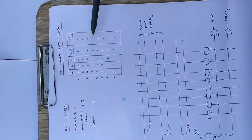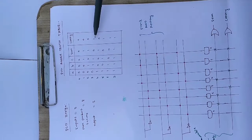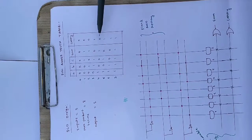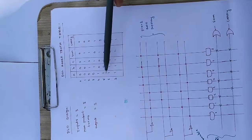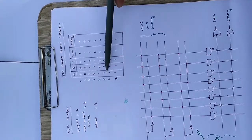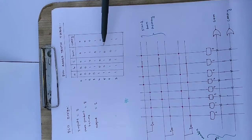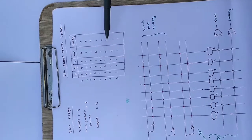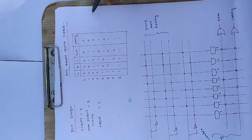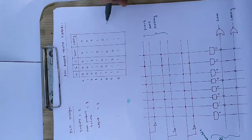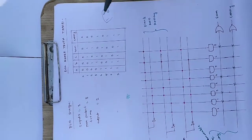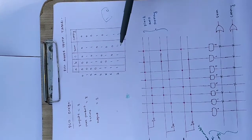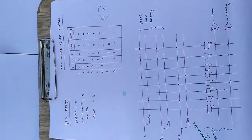When A=1, B=0, C=0: Sum=1, Carry=0. When two inputs are 1 again — A=1, B=0, C=1 — Sum=0 and Carry=1 because a carry is generated. When A=1, B=1, C=0: Sum=0, Carry=1. Finally, when all three inputs are 1 (A=1, B=1, C=1), both Sum and Carry are 1.